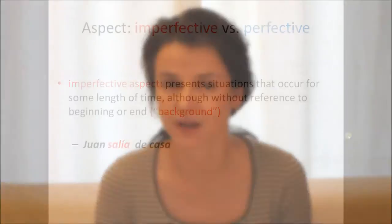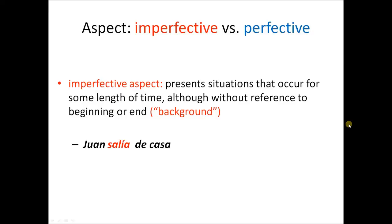Aspect represents the distinction between the different ways of looking at a situation, at how a situation evolves in time. If you use an imperfective aspect, you are viewing that situation as having some kind of internal complexity. For instance, the action of going through the door.